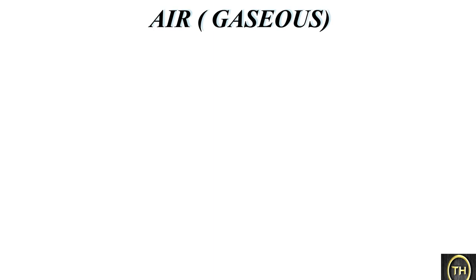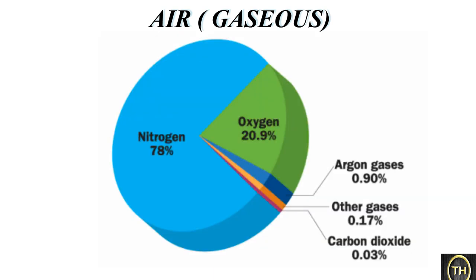The first one we are going to learn is about air. The air in the atmosphere around the earth contains nitrogen, oxygen, carbon dioxide, six inert gases, nitrogen dioxide, sulfur dioxide, water vapor and dust particles. The amount of gases in the air is greatest near the surface and decreases as we go higher and higher from the surface.